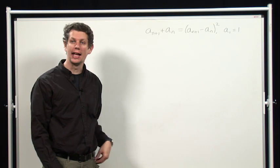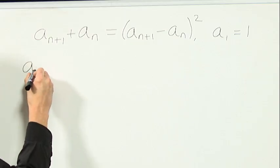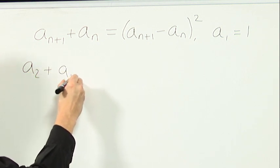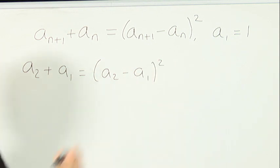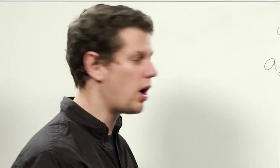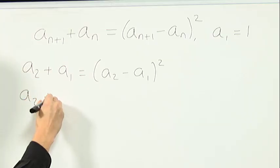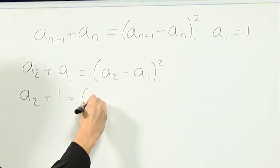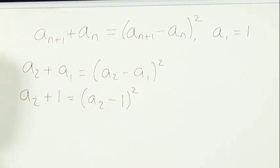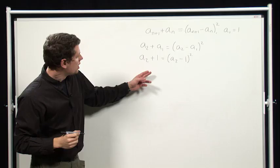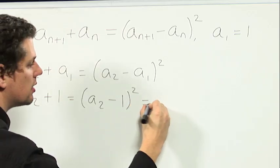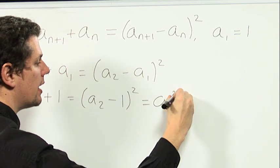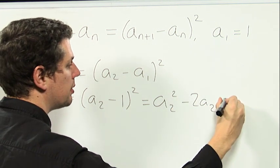We can do that by substituting n equals 1 into this equation. So we get a2 plus a1 equals a2 minus a1 all squared. We know that a1 is 1, so we can substitute that in. Now, this is an equation we can solve by multiplying out the right-hand side. We get a2 squared minus 2a2 plus 1.